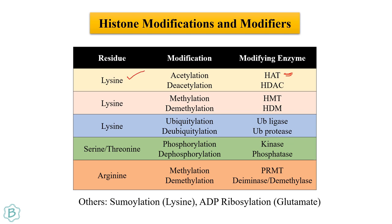Multiple modifications occur on lysine, serine, threonine, and arginine by particular enzymes. For example, histone acetyltransferase is responsible for acetylation and histone deacetylase for deacetylation. Histone methyltransferase and histone demethylase modify the methyl group on lysine. Ubiquitin ligase and protease are involved in ubiquitination and deubiquitination of lysine. Kinase and phosphatase handle phosphorylation and dephosphorylation of serine and threonine residues.